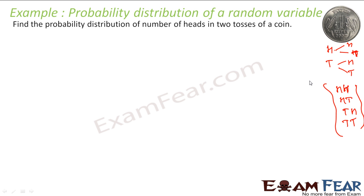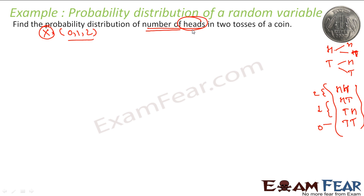We have to find the probability distribution of the number of heads. The number of heads can be zero, one, or two, so x can have values 0, 1, 2. Probability of x equal to zero — number of heads is zero — is TT. The probability of getting tail-tail is 1 by 4, because there are four possible options and one of these is TT.